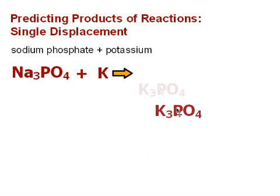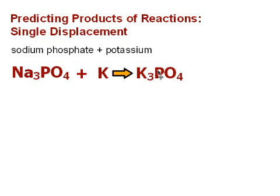So our products therefore are K3PO4, since K is a positive one ion, and Na solid sodium metal. We balance that by putting a three out in front of the K and a three out in front of the Na, and that's balanced.